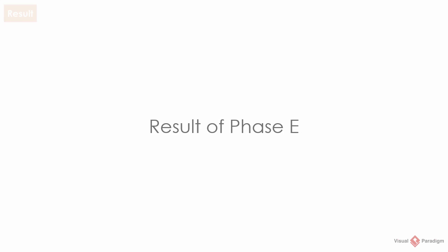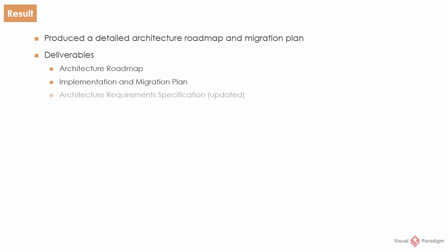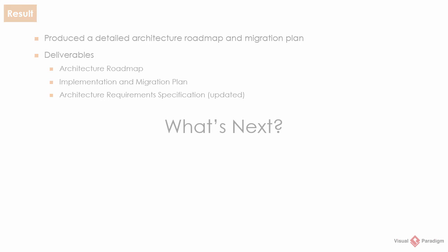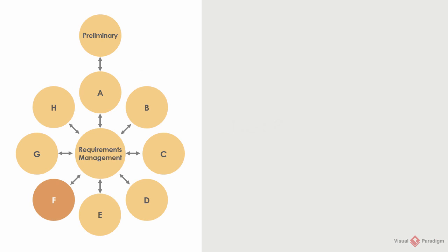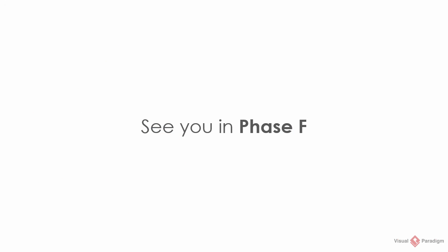The goal of Phase E is to produce a detailed architecture roadmap and migration plan, which involves the identification of work packages, transition architectures, and the creation of a migration plan. In this phase, the following deliverables will be produced: the architecture roadmap, the implementation and migration plan, and the updating of the architecture requirements specification. We can now move on to Phase F, where we'll confirm how the transition architecture that implements the architecture will be governed. Thanks for watching this video. See you in Phase F.